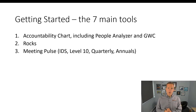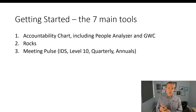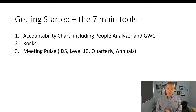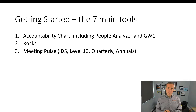Meeting Pulse is a big part of the Entrepreneurial Operating System — working backwards from your annual meetings to your quarterly meetings to your weekly meetings. They call it a Level 10 format because each meeting has the same agenda, same time, same place, same people every week. At the end of the meeting every person rates it one to ten, and the goal is we're shooting for a Level 10. If people gave it a seven or eight, we ask what we can do next week to make it better.